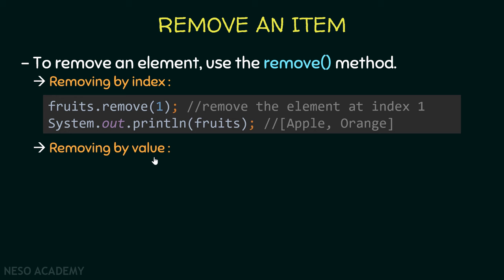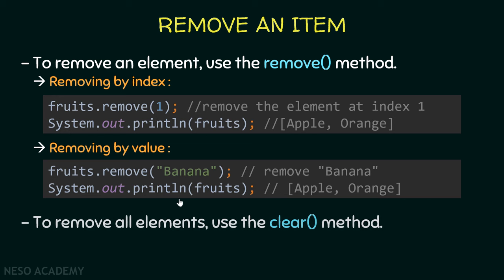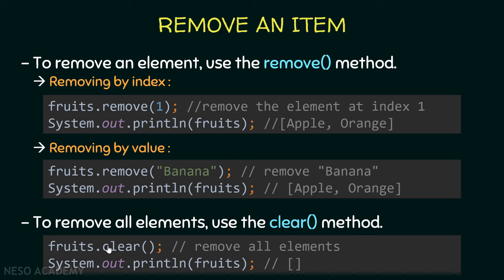To remove an element by value, the equals() method is used internally. For example, calling remove("banana") iterates over the ArrayList, compares each element using equals(), and removes the matching one. To remove all elements at once, we use the clear() method, after which printing the ArrayList shows an empty list.